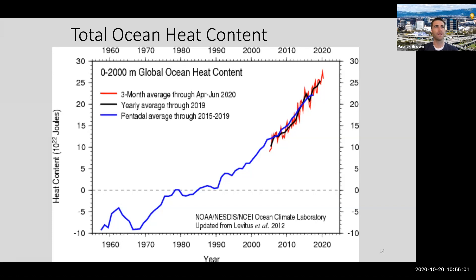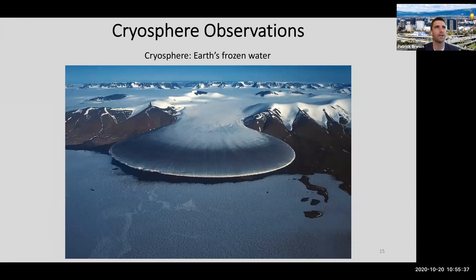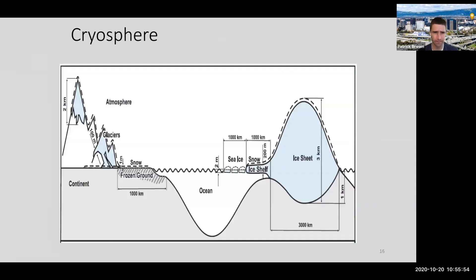Those are our main instrumental measurements of global average temperature increasing since the 1800s, with confirmation from weather balloons, satellites, and instruments measuring temperature in the ocean. There's also more indirect evidence of the Earth getting warmer. The main lines of indirect evidence have to do with the Earth's cryosphere - the Earth's frozen water.